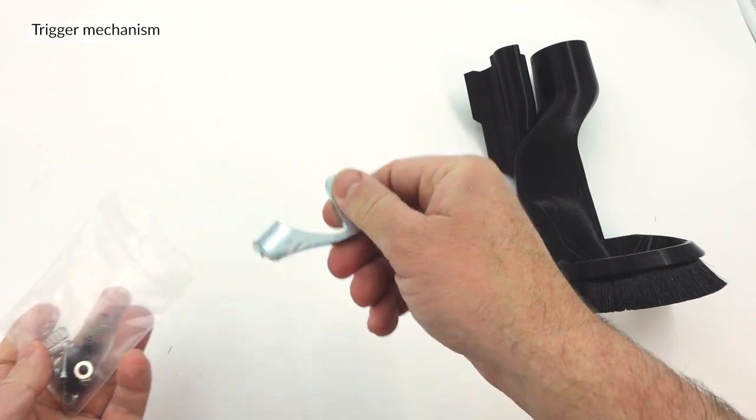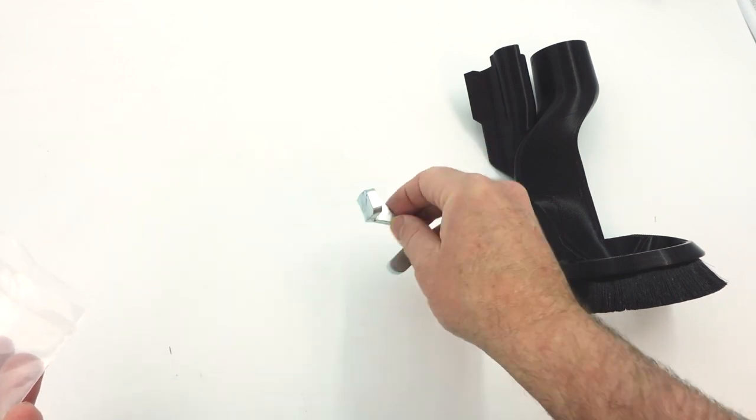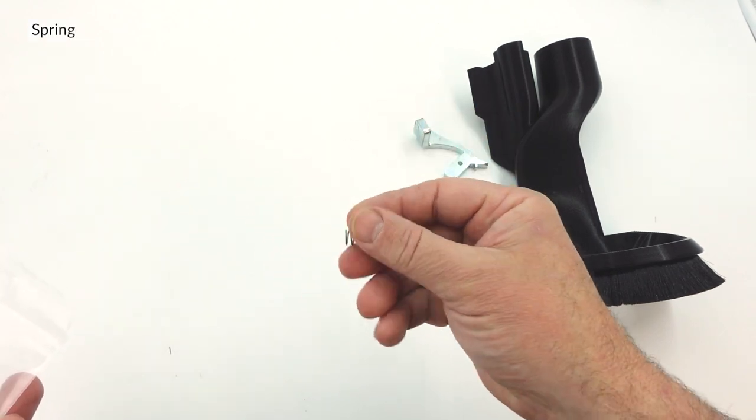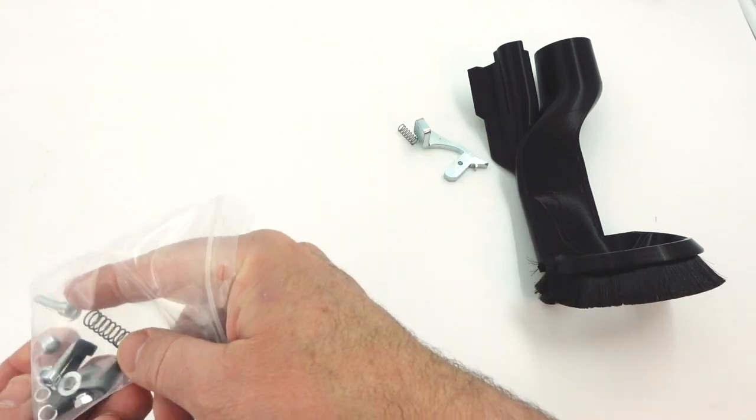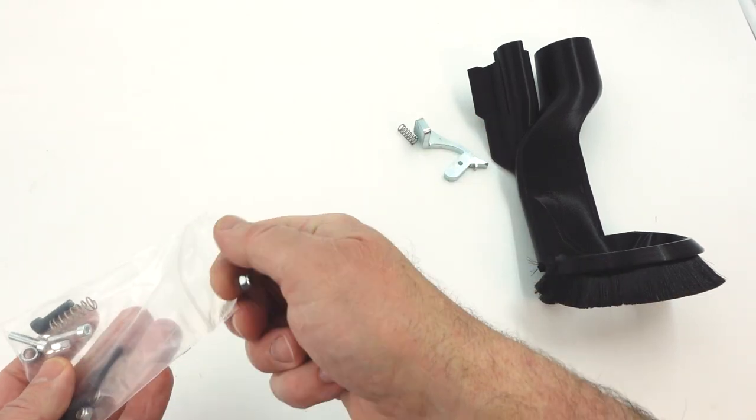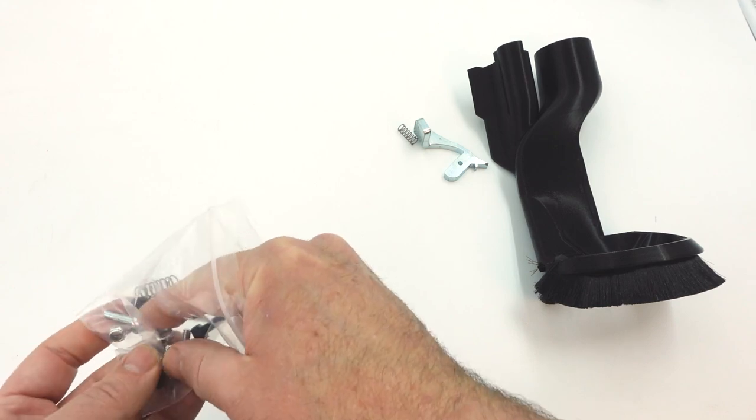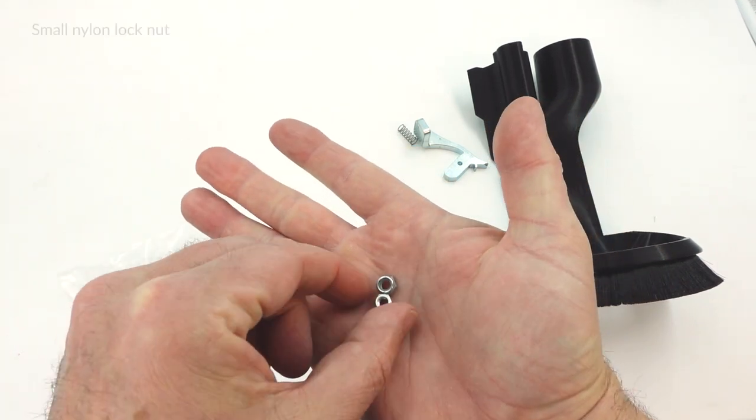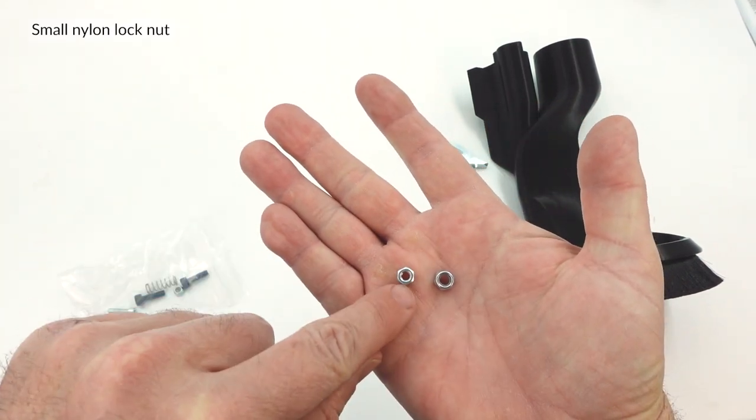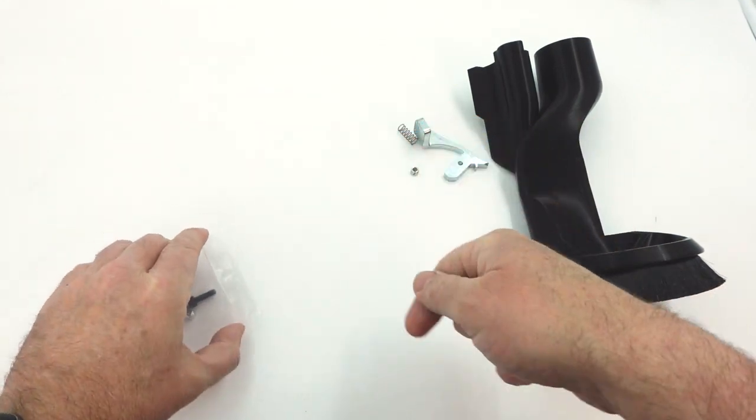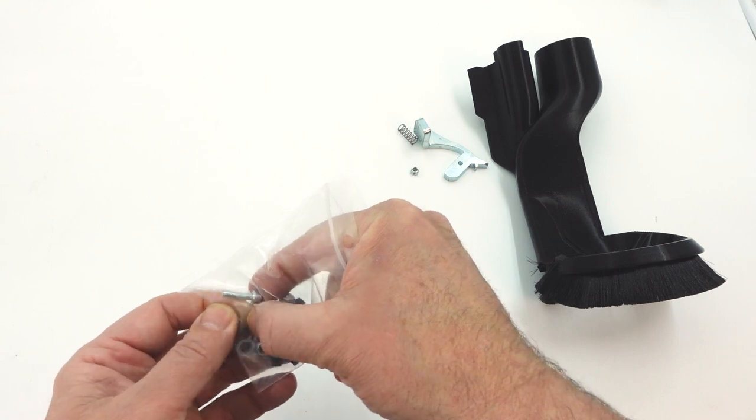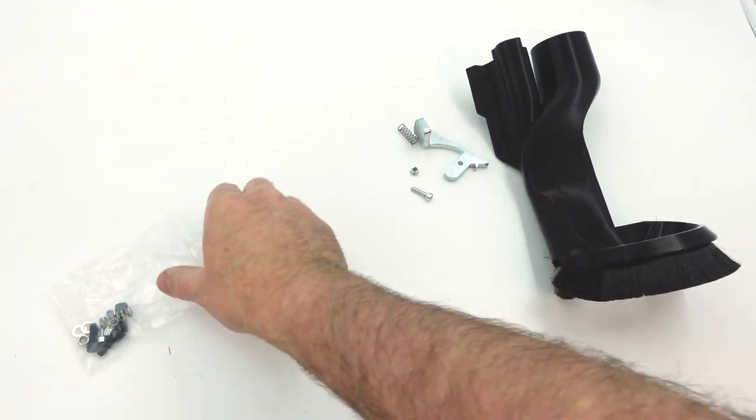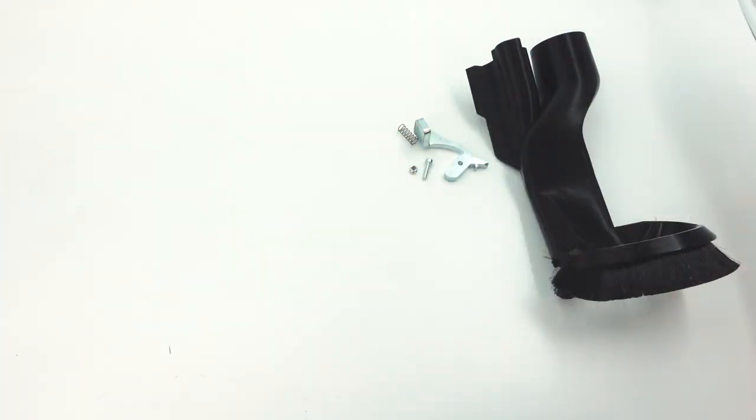From the bag you're going to remove the steel trigger mechanism. Separate one of the springs and put that aside as well. There are two sizes of nylon lock washers. Remove one of the smaller sizes and set aside. And finally remove one of the small silver bolts. Set aside the hardware bag with the dust shoe mount.